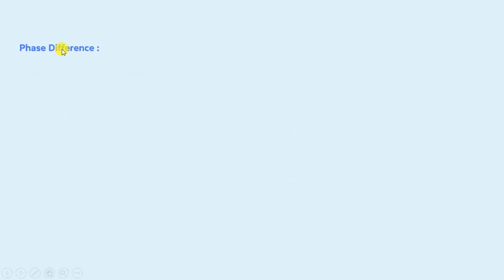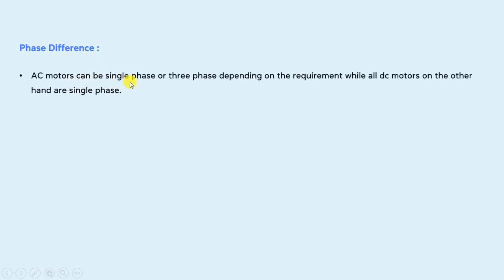The next point is the phase difference. AC motors can be single phase or three phase depending on the requirement, while all DC motors are single phase. So DC motors are always single phase, whereas AC motors can be single phase or three phase depending on your requirement.